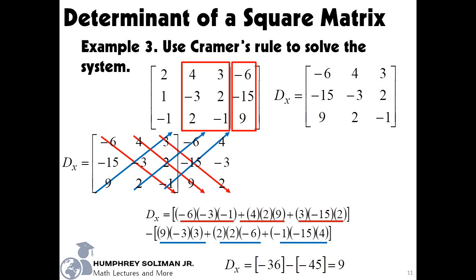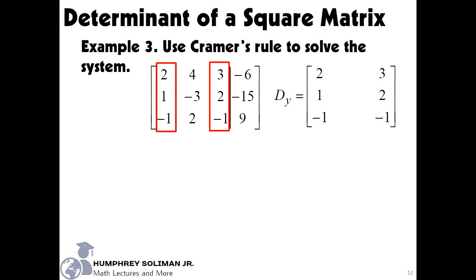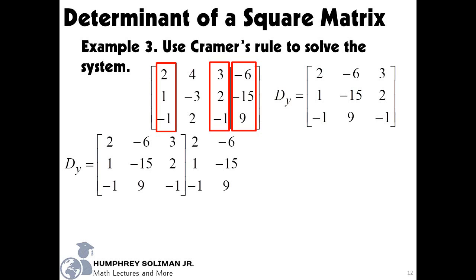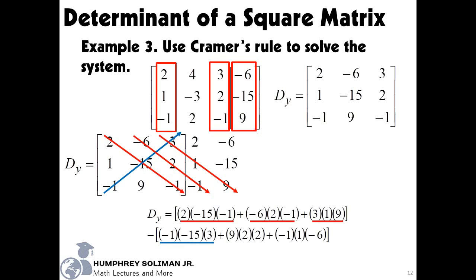Next, we need the determinant of the system's coefficients for the variables, but we have to replace the column for the coefficients of y by the column of the constants of the equations. This will be our value of dy. We already copied the first two columns and placed these beside it. Then we will get the sum of the quantity: 2 times negative 15 times negative 1, plus negative 6 times 2 times negative 1, plus 3 times 1 times 9. Minus the sum of the quantity: negative 1 times negative 15 times 3, plus 9 times 2 times 2, plus negative 1 times 1 times negative 6. Finally, dy equals negative 18.